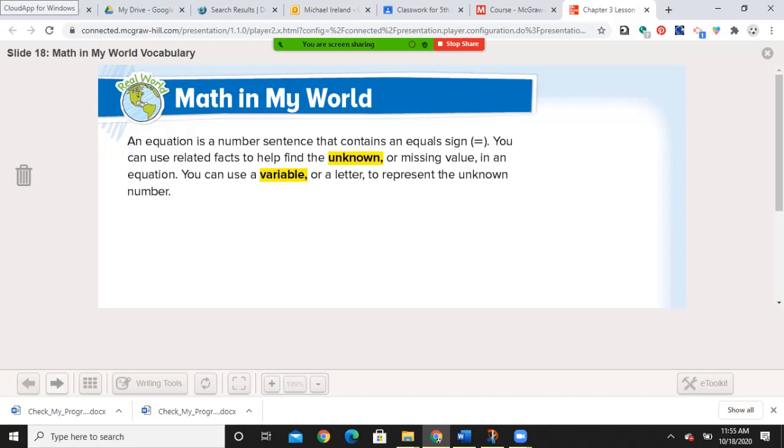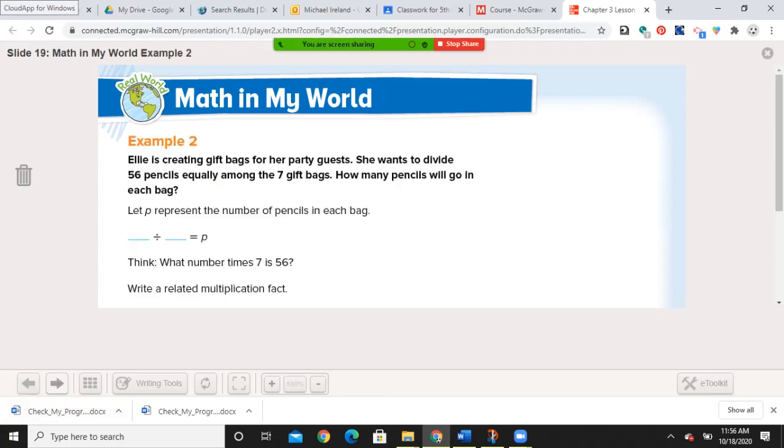We do have some highlighted words here. An equation is a number sentence that contains an equal sign. So, 3 times 6 equals 18 is an equation. You can use related facts to help find the unknown or missing value. So, if I said something like 3 times N equals 18, that unknown is the N. I can use a variable or letter to represent the unknown number. As we progress through 5th grade and move on to 6th grade, you will start seeing the presence of more and more variables. But they shouldn't be too scary.